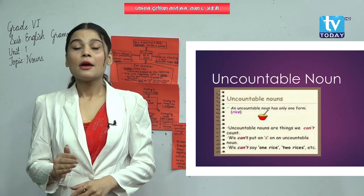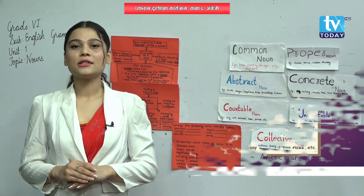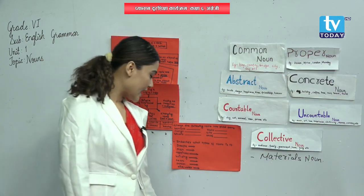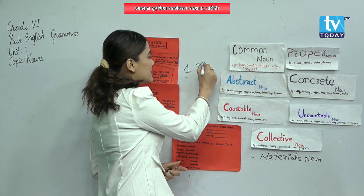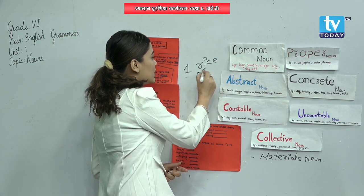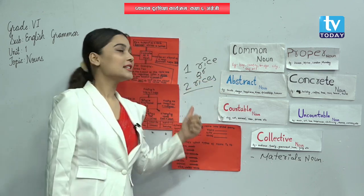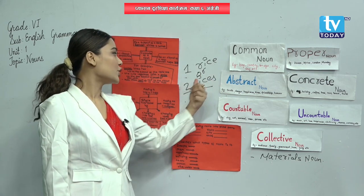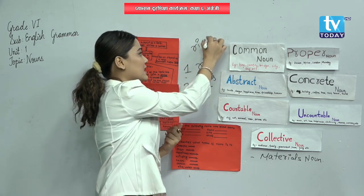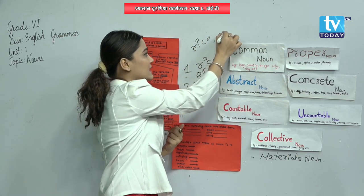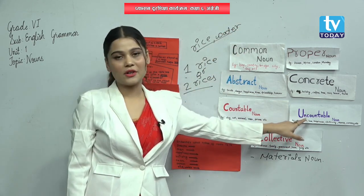The most important thing we need to remember is that we cannot use numbers with uncountable nouns. We cannot say 'one rice' or 'two rices.' We can only say rice, water. We cannot add 's' to uncountable nouns.